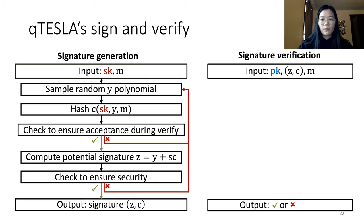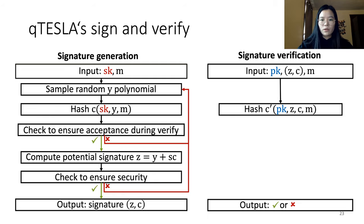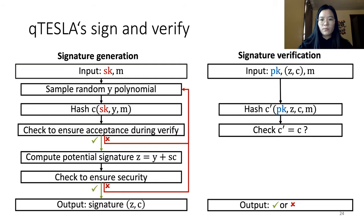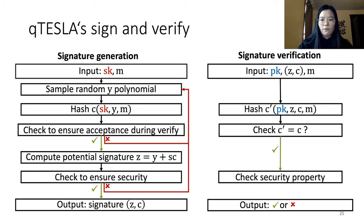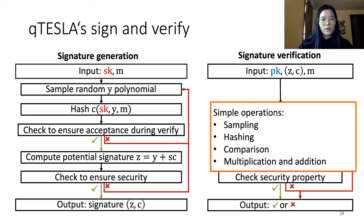For the verification step, given the public key, the signature, and the input message, you first hash all of them together. Then you do a comparison with part of the signature. If this comparison result is valid, you go further and check the security property. If this check passes, the verification passes; otherwise it fails. As we can see, the operations involved in Q-TESLA are straightforward: basically all you need are sampling, hashing, some comparison, some multiplication, and additional operations.